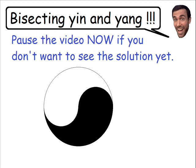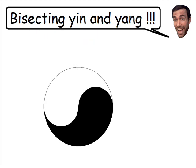I recommend pausing the video now if you don't want to see the solution yet, because I'm about to give you the answer. So is it possible to bisect both yin and yang using a straight line? The answer is yes, it is indeed possible. If we draw a line that goes directly through the center of the circle and also forms a 45-degree angle with the horizontal, this line is going to bisect both yin and yang.